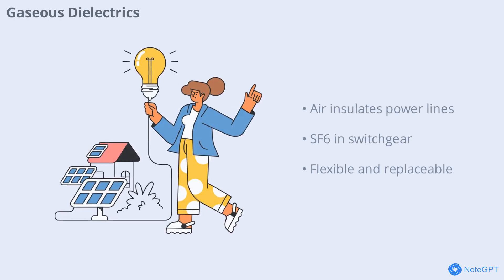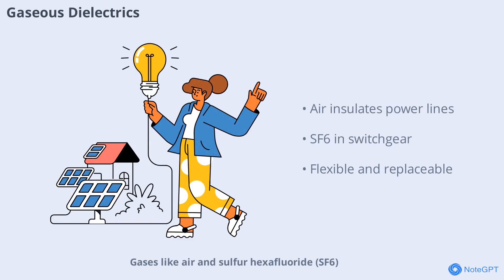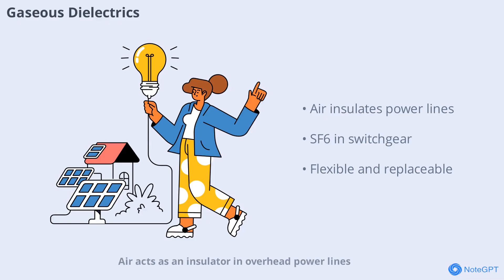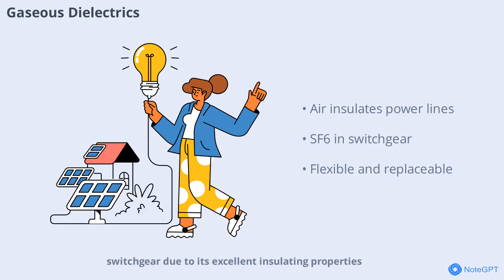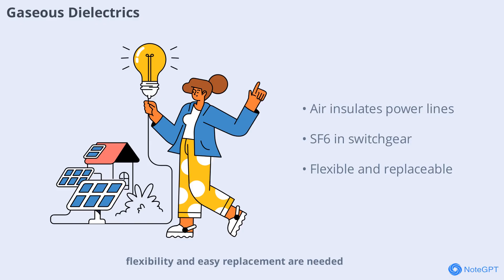Gases like air and sulfur hexafluoride (SF6) are used as dielectrics in certain applications. Air acts as an insulator in overhead power lines, while SF6 is used in high-voltage switchgear due to its excellent insulating properties. Gaseous dielectrics are especially useful where flexibility and easy replacement are needed.